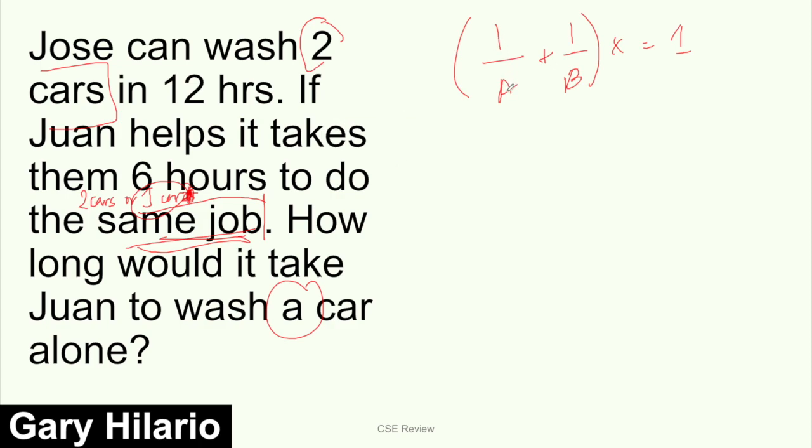The formula for work problems - and you can click here to watch the series on work problems where I discussed a lot of this - is 1/A + 1/B times X equals 1. One over for the first person solo, plus one over the second person, times X equals one. Same as the pipe problem. But in this case, we can't put it in right away like that because we haven't converted the rate yet.